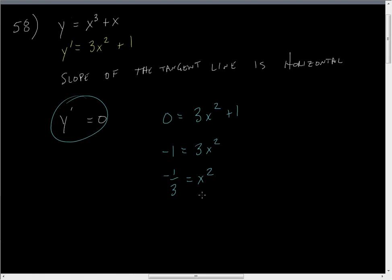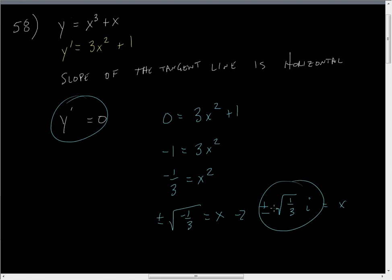Wow, this is kind of interesting. Plus or minus the square root of negative one-third equals x, which is really plus or minus the square root of one-third times i equals x. This means there are no real solutions. Since there are no real solutions, there are no points at which the tangent line is horizontal.